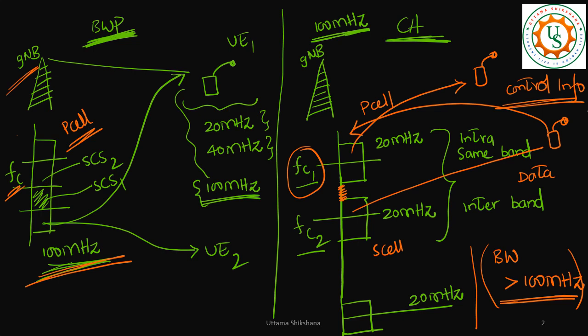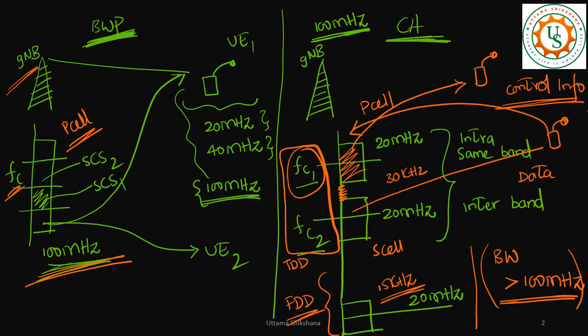One more aspect is that these component carriers can be a mix of TDD and FDD — carrier aggregation with a TDD and FDD combination is also possible. Some component carriers could be operating at 30 kHz subcarrier spacing, so there is support for different numerologies across different component carriers. I hope this concept is clear. There could be many other differences as well — if any of you know some more important differences, please comment in the comment section. Thank you very much, have a great day, bye bye.